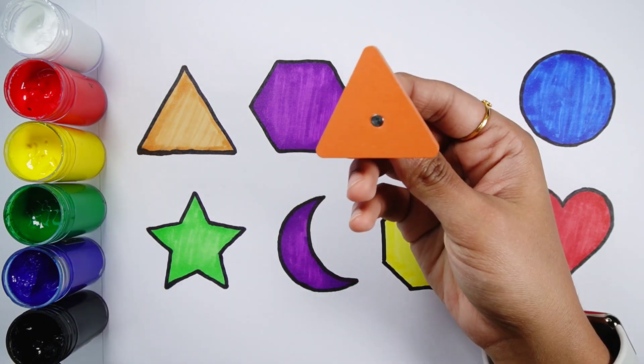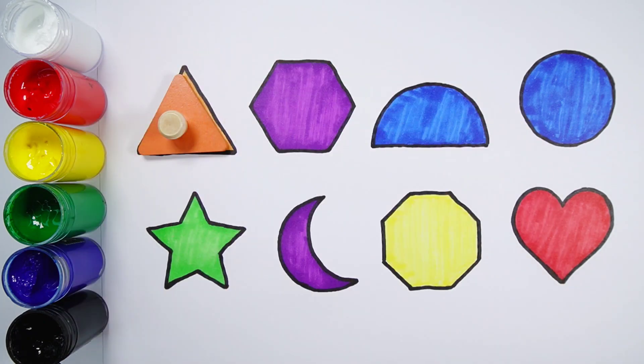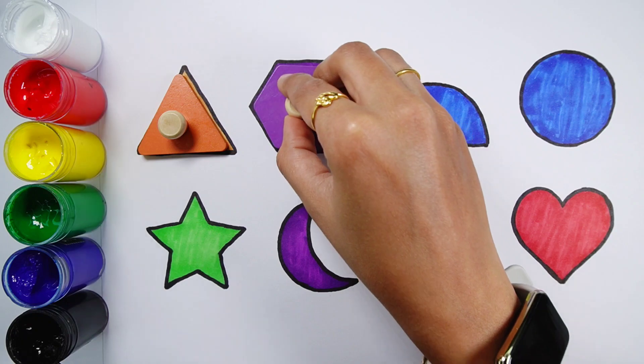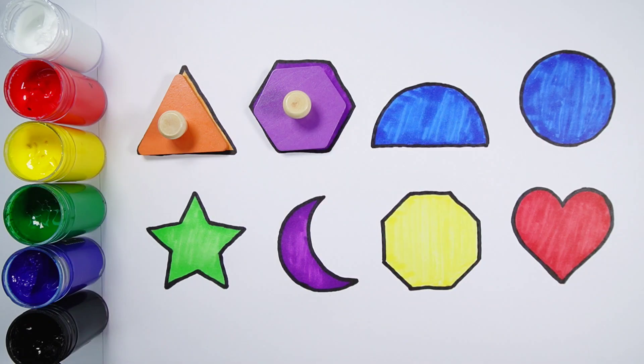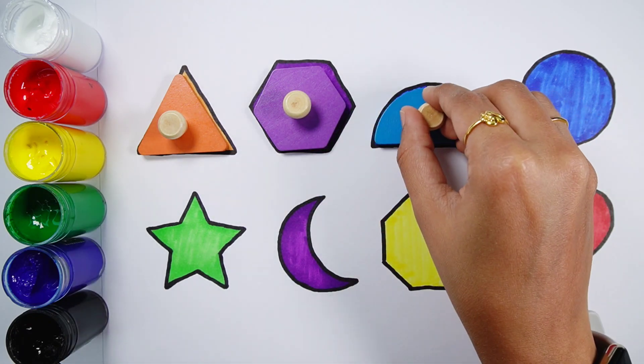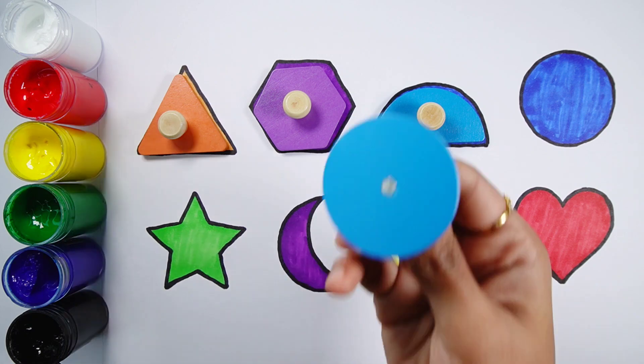An orange triangle. Purple hexagon. Blue semicircle. Blue circle.